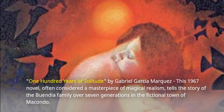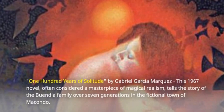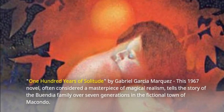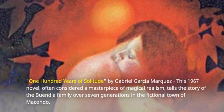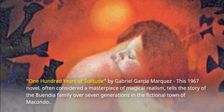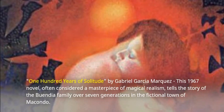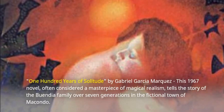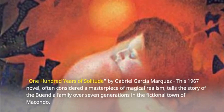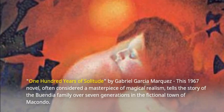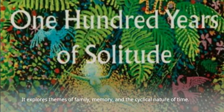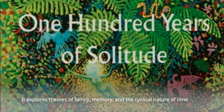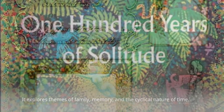One Hundred Years of Solitude by Gabriel Garcia Marquez. This 1967 novel, often considered a masterpiece of magical realism, tells the story of the Buendia family over seven generations in the fictional town of Macondo. It explores themes of family, memory, and the cyclical nature of time.